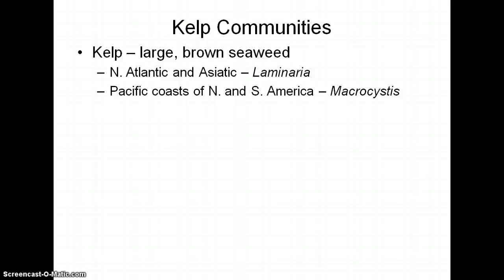The main thing that makes up a kelp community is obviously the kelp — that's the basis for everything there. Kelp is just a large brown seaweed, and depending on where you are in the world, you can have different kinds. In the North Atlantic or the Asiatic area, the main type that forms kelp communities is Laminaria. On the Pacific coast of North and South America, it's Macrocystis, which is the giant kelp. I'll show you pictures of the two so you can see the difference.